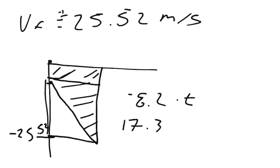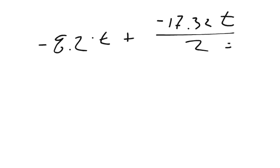So, 17.32 negative times one half of the time. So, base times height divided by 2. And if I add these two equations together, I should get something equal to 29.8. So, negative 8.2 t plus negative 17.32 t over 2 equals 29.8. So, that's what the area should equal.